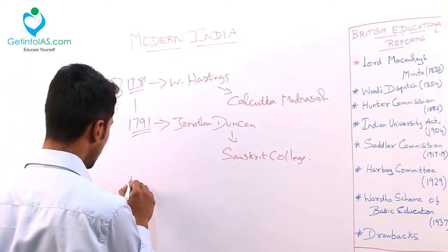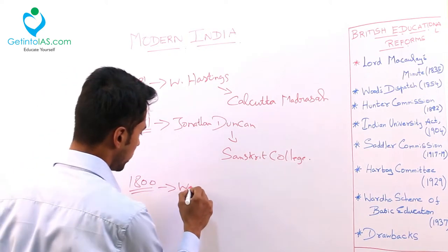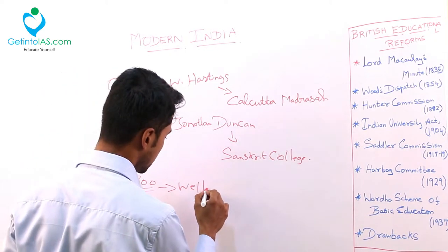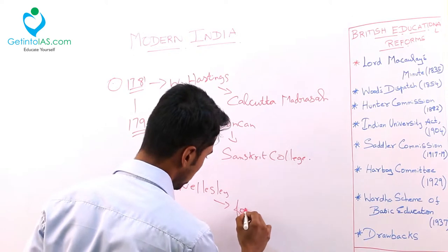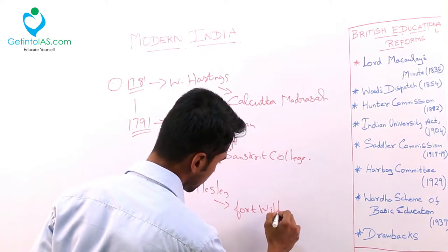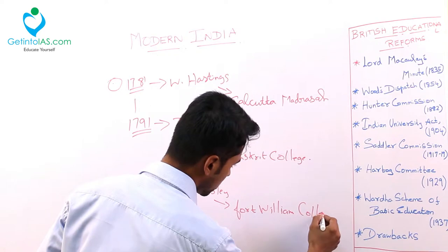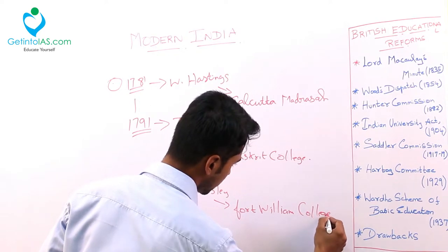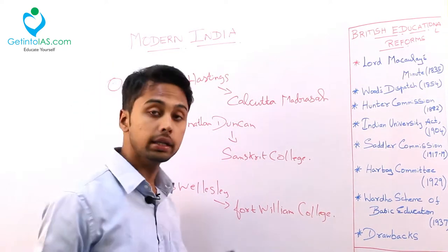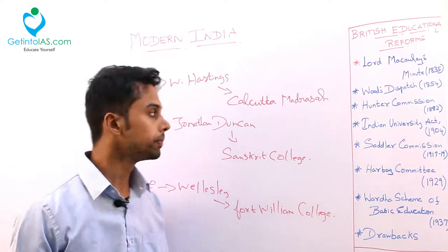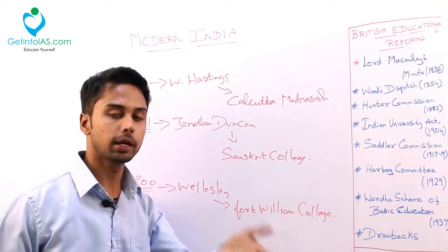Also, by 1800, Wellesley started something called Fort William College. The purpose of this Fort William College is to train the civil servants for administration. So these were some few exceptions in the initial period.